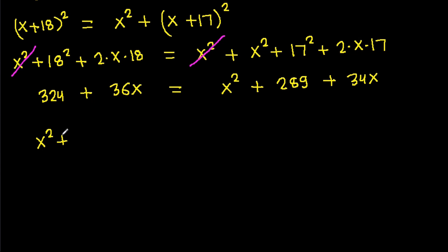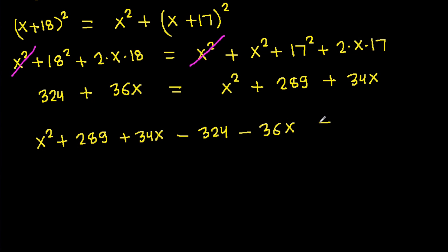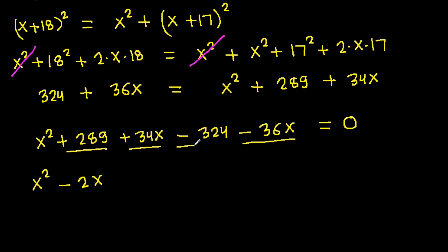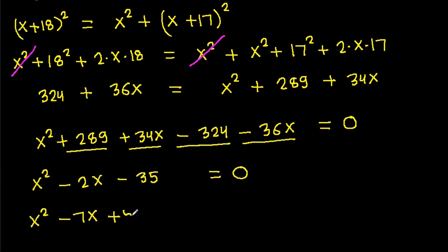Rearranging: x² + 289 + 34x − 324 − 36x equals 0. Simplifying: x² − 2x − 35 equals 0. And −2x can be split as −7x + 5x, so x² − 7x + 5x − 35 equals 0.